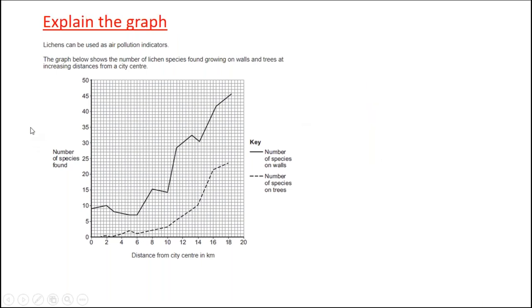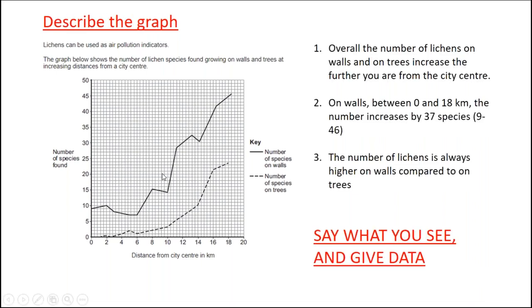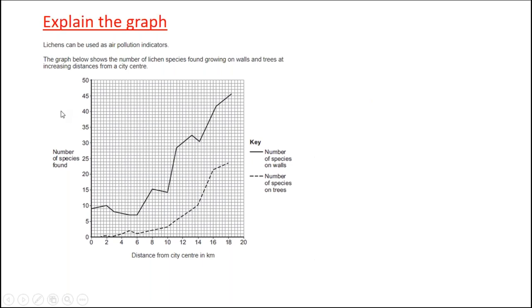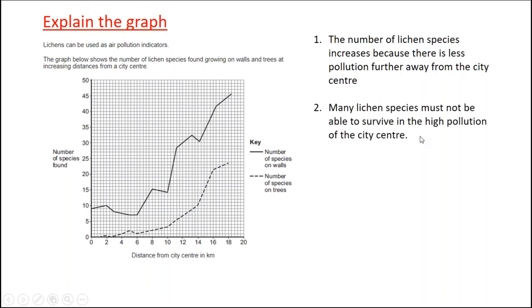So same graph, same question, except now it says explain. If you're asked to explain a graph or explain something, you don't need to describe it. You don't need to state these trends. You need to explain why there are trends. So my main reason could be clearly lichens are used as air pollution indicators. Clearly, most of the lichens die in the city center. So the number of lichen species increases further away from city center because there's less pollution. And clearly the high pollution city center must be killing some lichen species so they can't grow there.